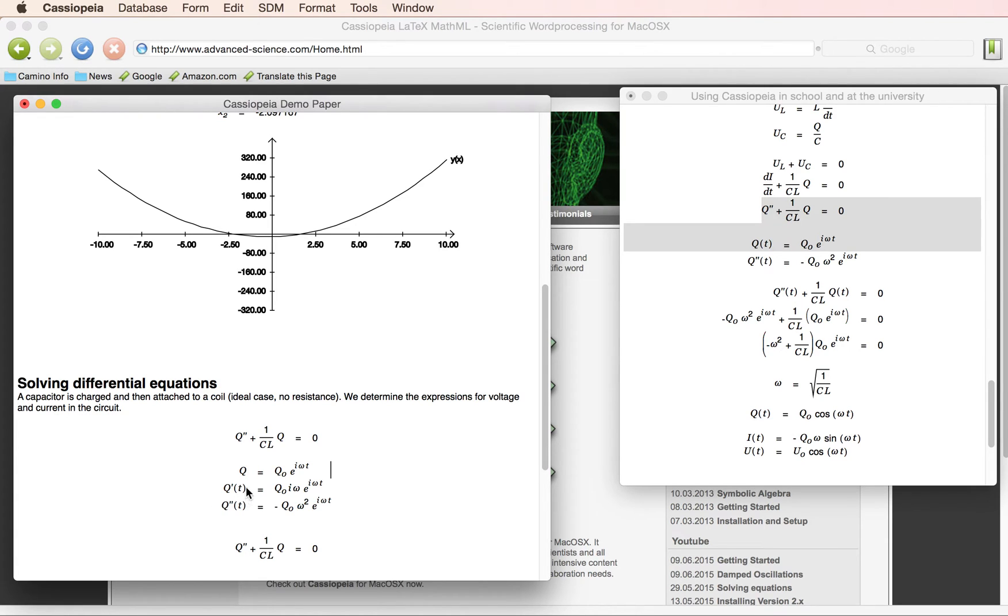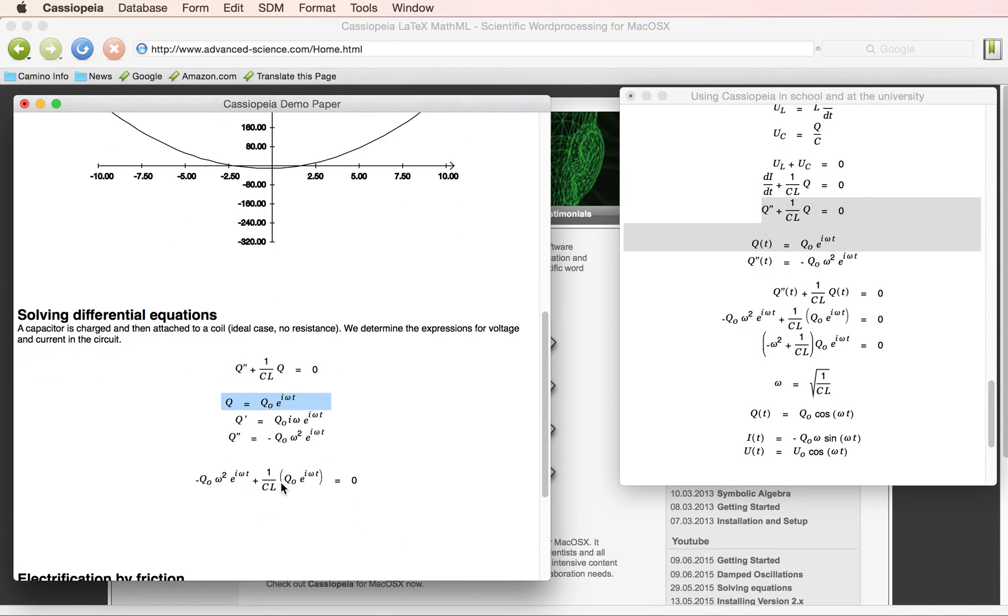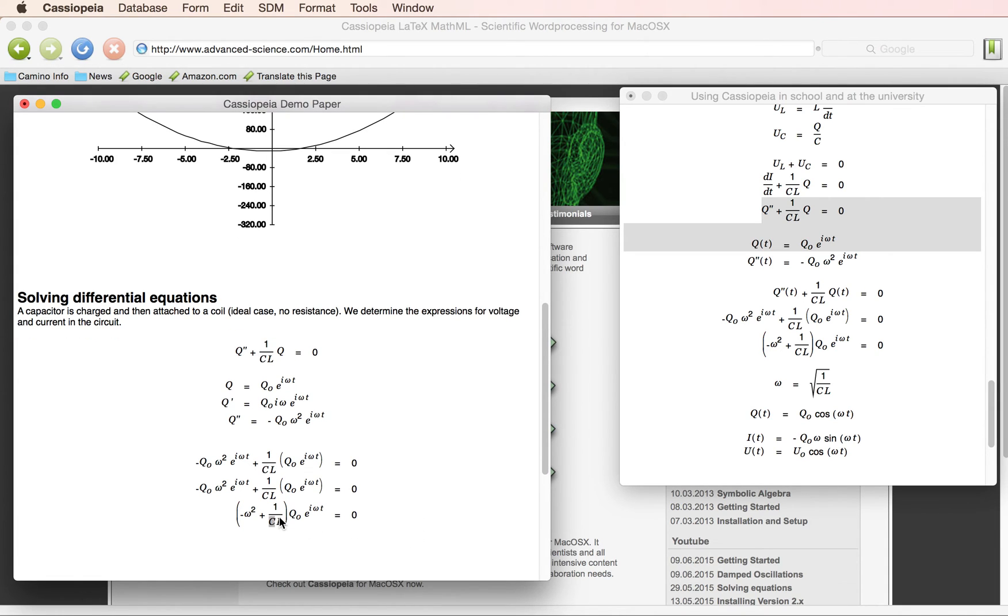So we have to rename these variables first and can then substitute like that, get rid of this factor and this factor, and finally find omega to be that.